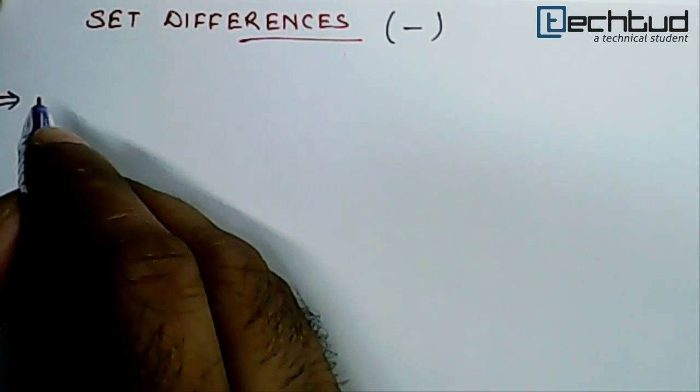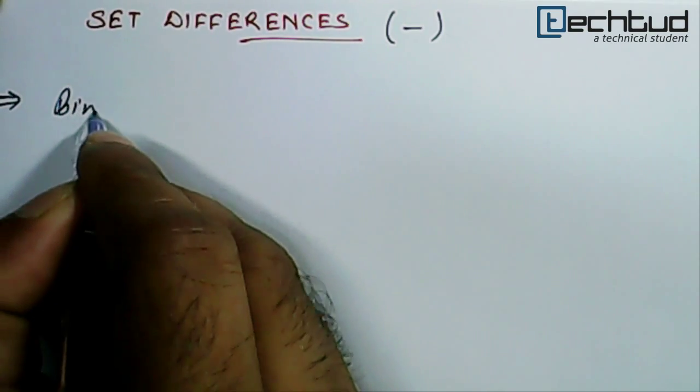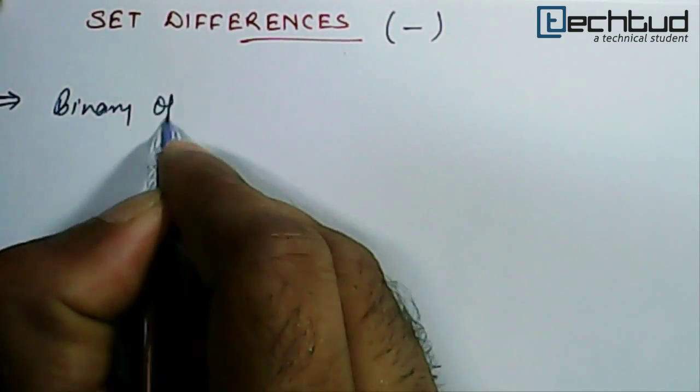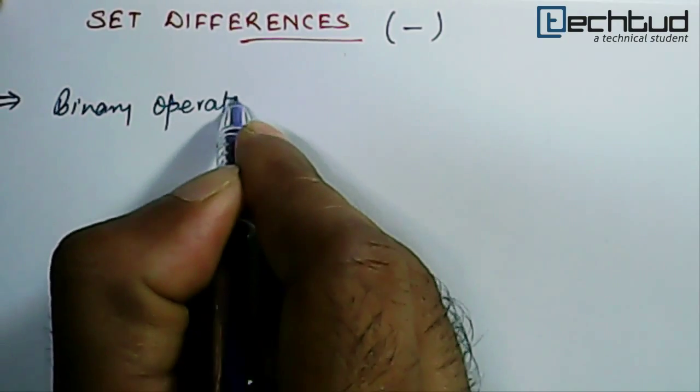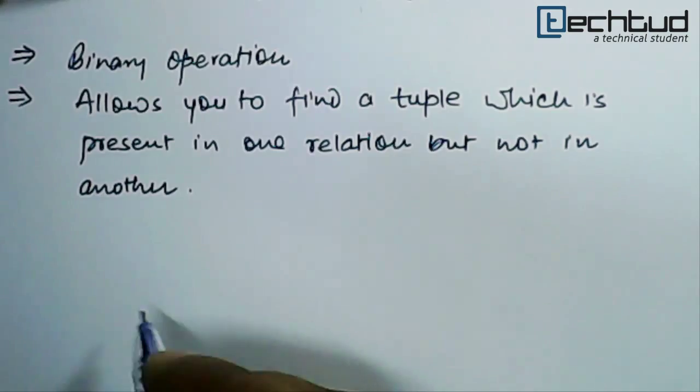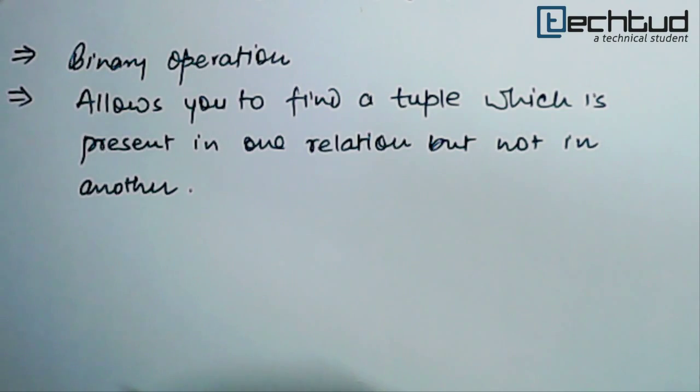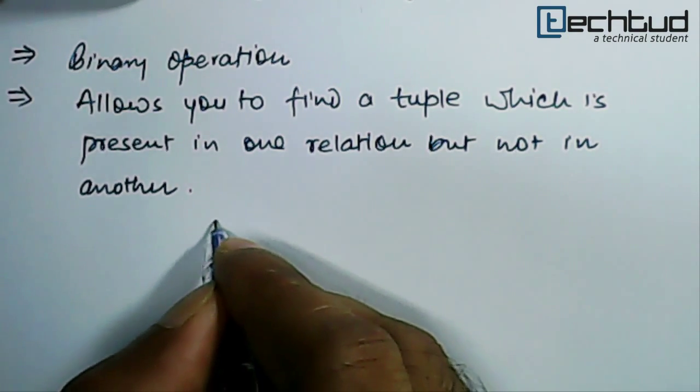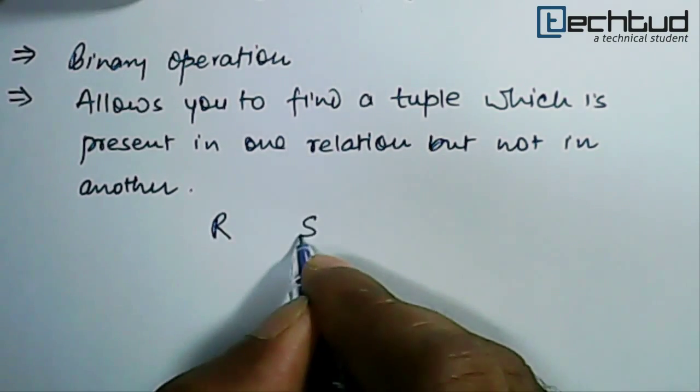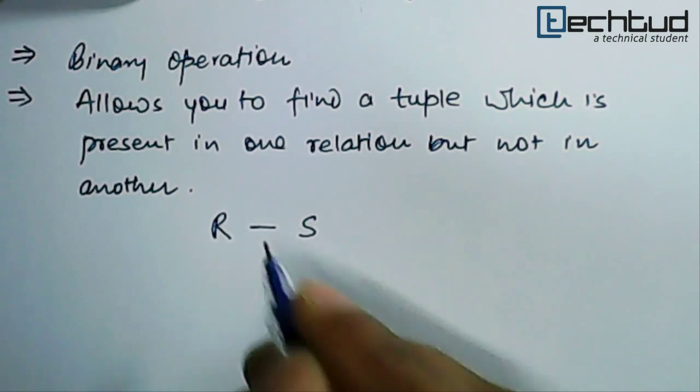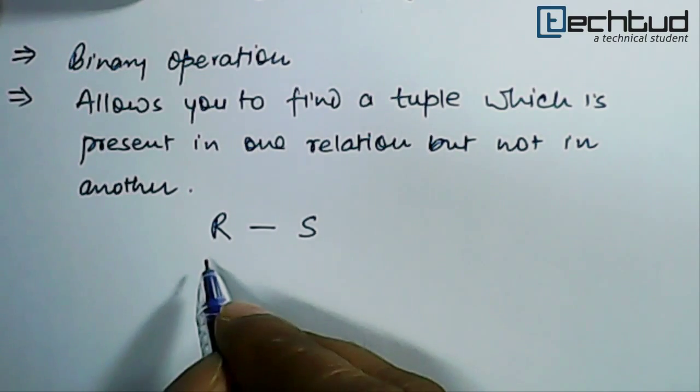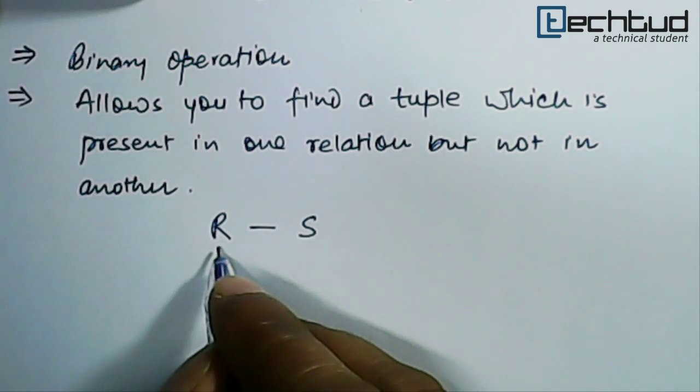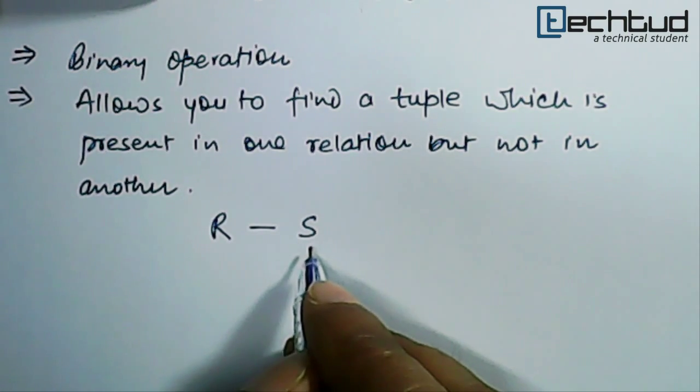It is again a binary operation. It allows you to find out a tuple which is present in one relation but not present in other. So let us say we have two relations R and S and we write R minus S, then it returns a tuple which is present in R but not present in S.